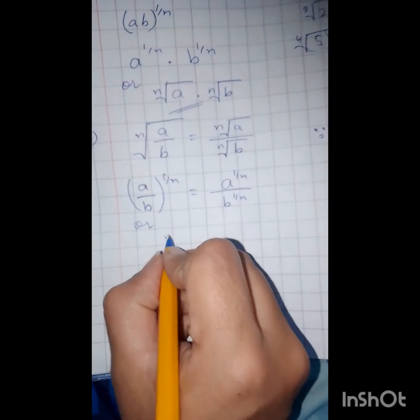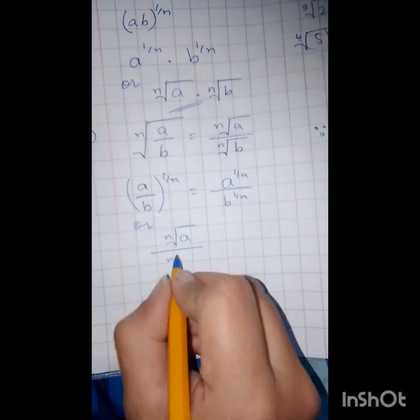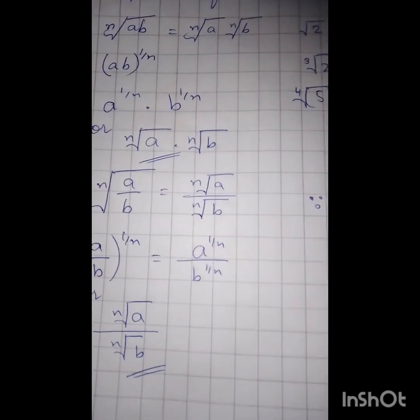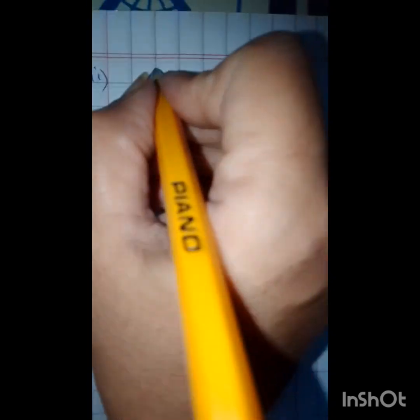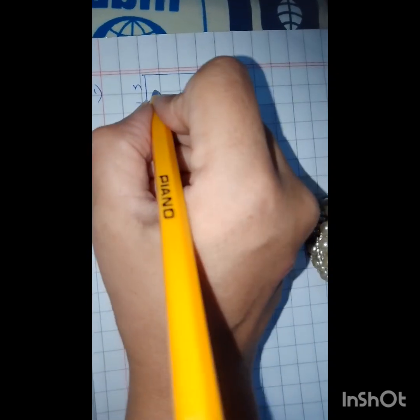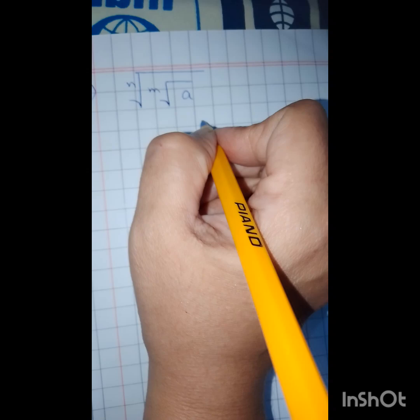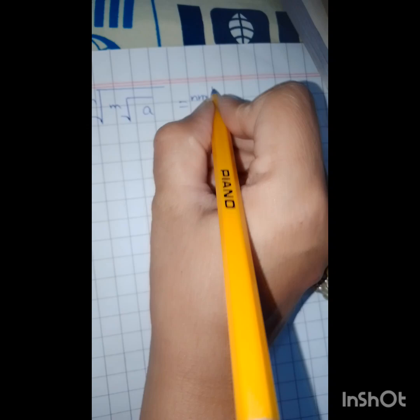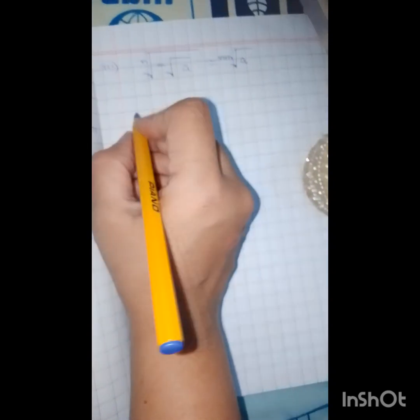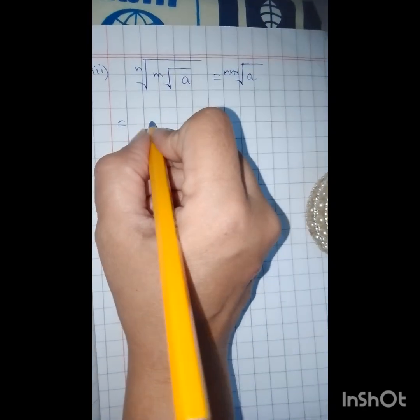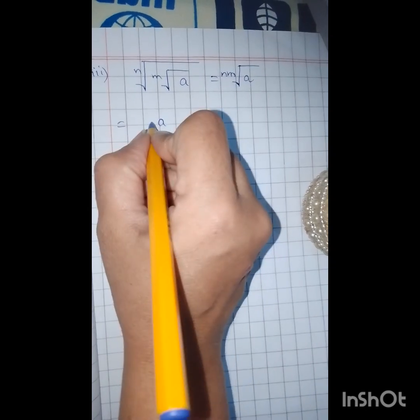The power is being divided on both the variables, up and down. The root will be reversed. Now there are two radical signs, root n then root m and the radicand is a. So both the indices will come outside together and the radicand will remain alone inside.